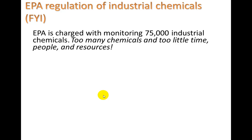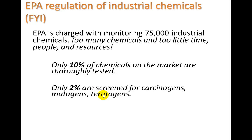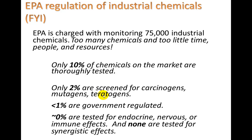The EPA is charged with monitoring 75,000 industrial chemicals that have been produced — too many chemicals and too little time, people, and resources to analyze all of them. Only 10% of chemicals on the market are thoroughly tested. Only 2% are screened for being carcinogens, mutagens, or teratogens. Less than 1% are government regulated, and the rest can be used under any conditions. About 0% are tested for endocrine, nervous, or immune effects, and none are tested for synergistic effects.